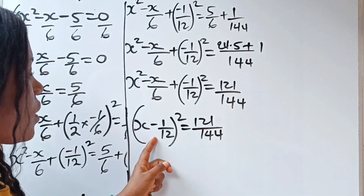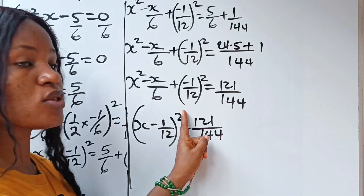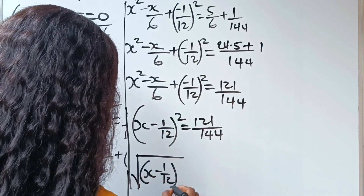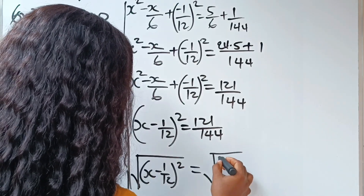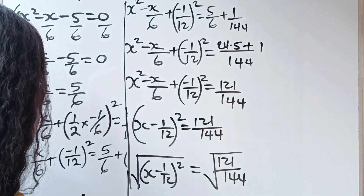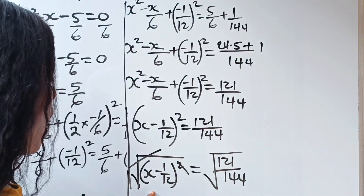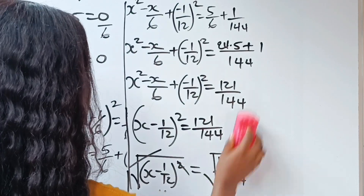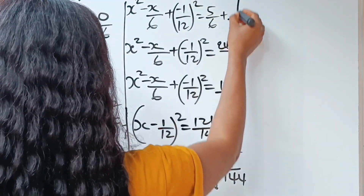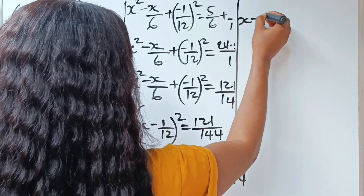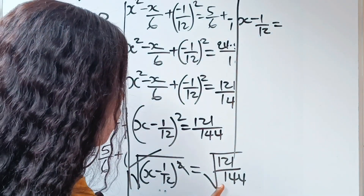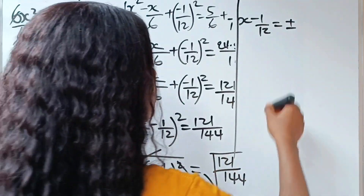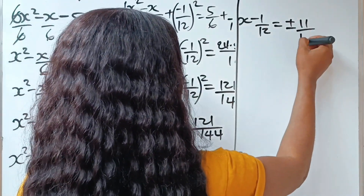Now in order to open this bracket, we take square roots of both sides so the squares cancel out. So we have square root of x minus 1 over 12 squared is equal to square root of 121 over 144. The square roots cancel on the left, giving us x minus 1 over 12 is equal to plus or minus square root of 121 over square root of 144, which is plus or minus 11 over 12.